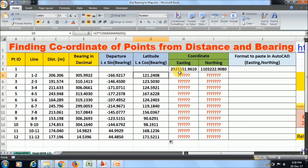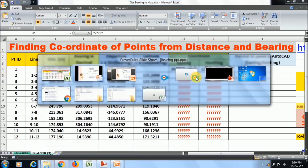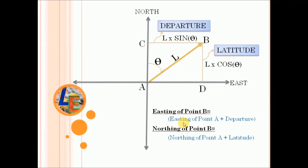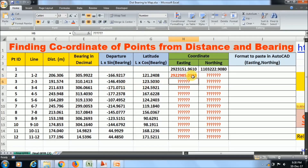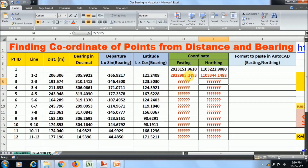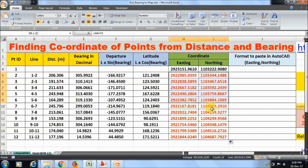Now I will calculate the unknown coordinates by adding departure and latitude to the known coordinates. To calculate easting and northing, you add the easting of point A plus departure, and northing of point A plus latitude. So: equal to this easting cell plus the departure of the next line — Enter — and for northing: equal to this cell plus the latitude — Enter. If you drag this formula down, you will get all the coordinates automatically.